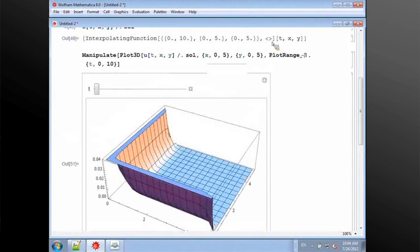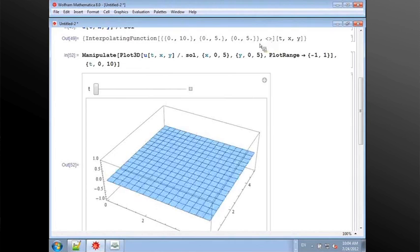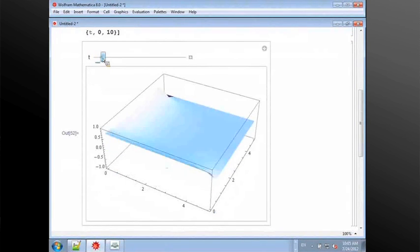So, I want to fix the plot range. Let's say plot range between, and I know that my temperature was sine function, so probably minus one to one is enough. Now, I just fix that, the z range. See, it doesn't show the fluctuation.